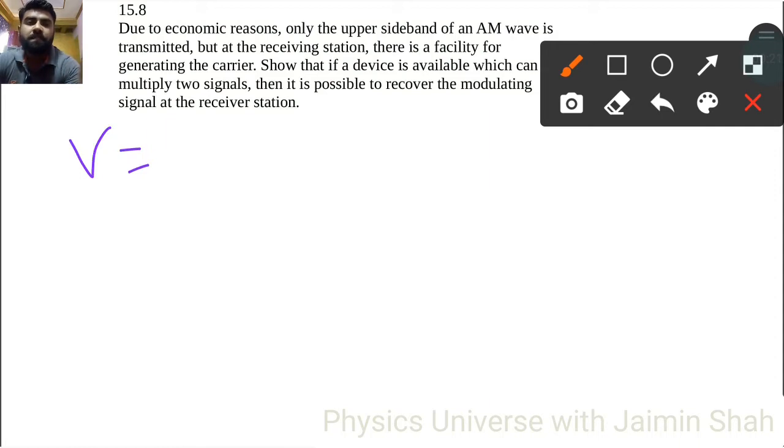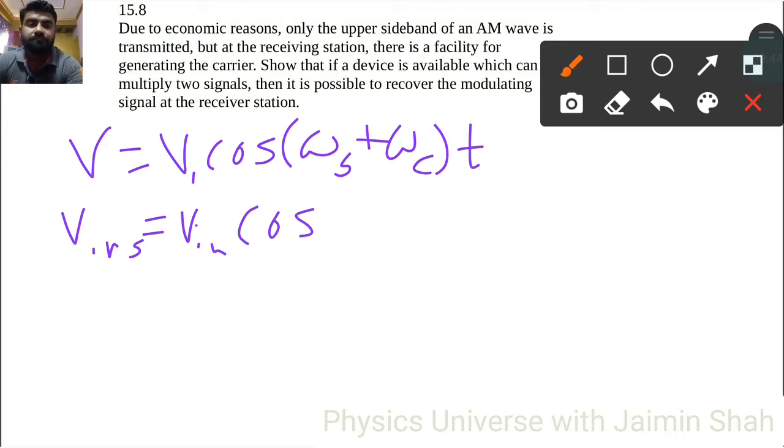First of all, our V is equal to V₁ cos(ωₛ + ωc)t, and here V_instantaneous is equal to V_in cos(ωc)t. Now see here, multiplication of both the waves.